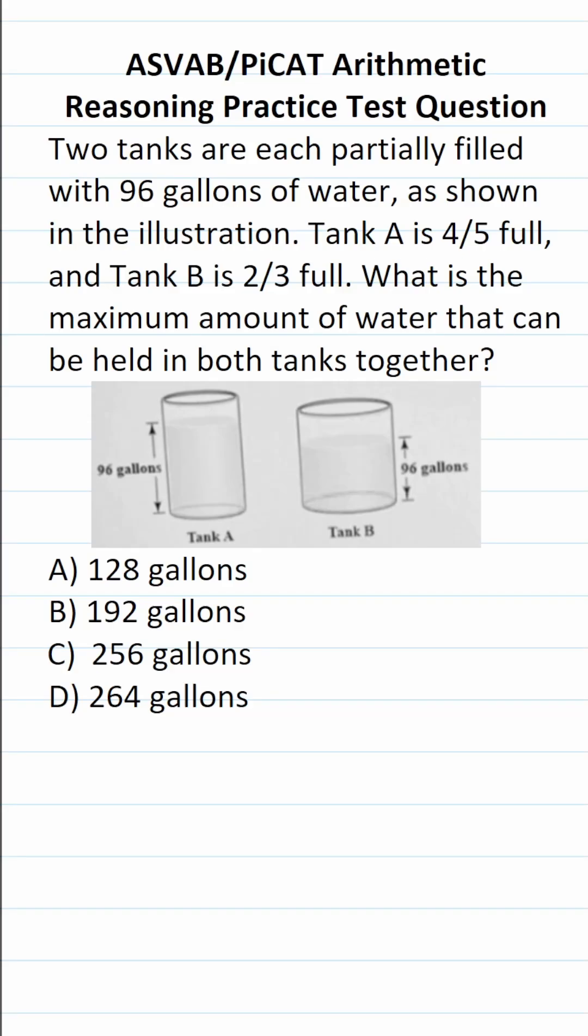This arithmetic reasoning practice test question for the ASVAB and PiCAT says two tanks are each partially filled with 96 gallons of water. As shown in the illustration, tank A is four-fifths full and tank B is two-thirds full. What is the maximum amount of water that can be held in both tanks together?